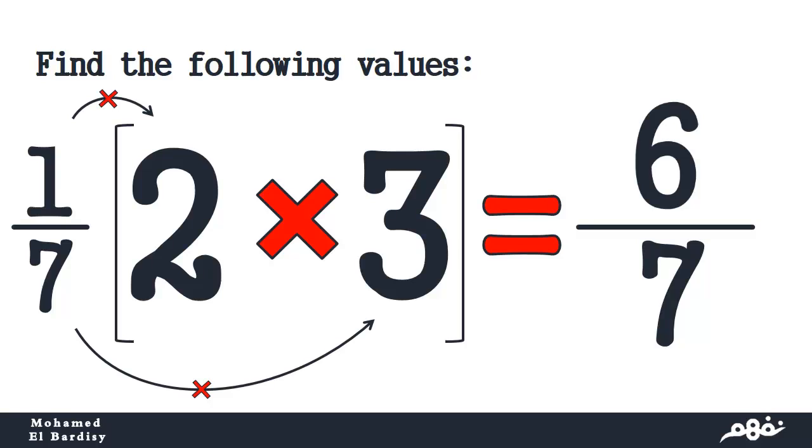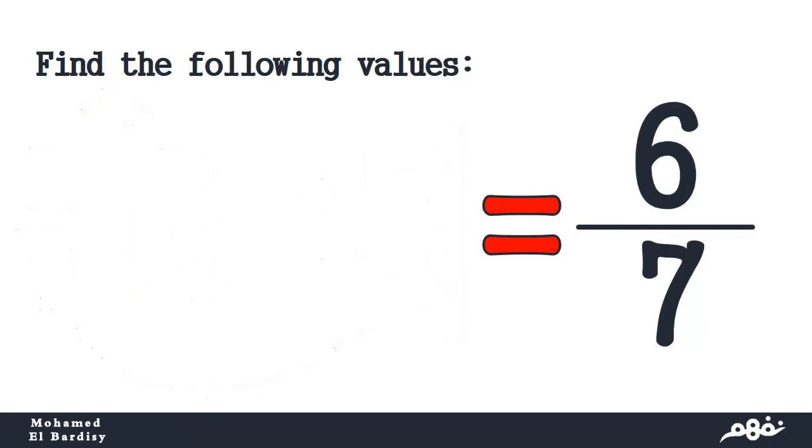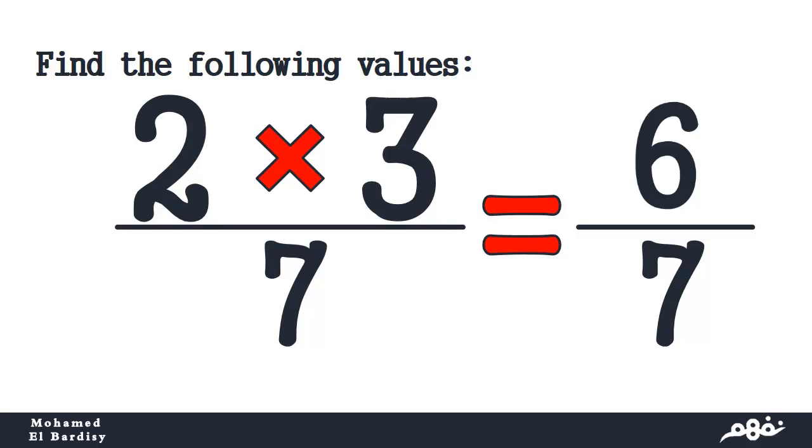Instead you multiply 2 by 3 easily and normally, and then divide by 7. Like this: 2 times 3 over 7 equals 6 over 7. This is the multiplication of any rational numbers.